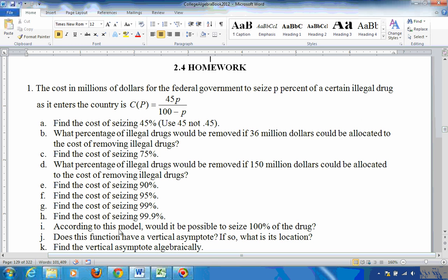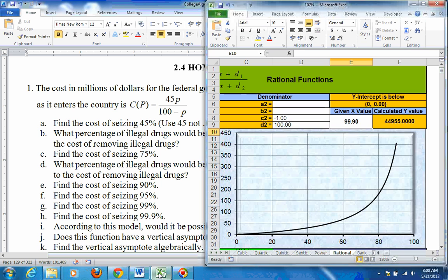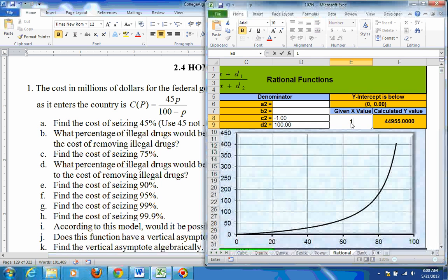So now I says, according to this model, would it be possible to seize 100% of the drugs? Well, percent is an X value, so put 100 in for X, and you get this, infinity. So it would cost an infinite amount of money, and since you don't have an infinite amount of money, you can't reach infinity, therefore you can't reach 100% of all illegal drugs seized. So, no, it's impossible.